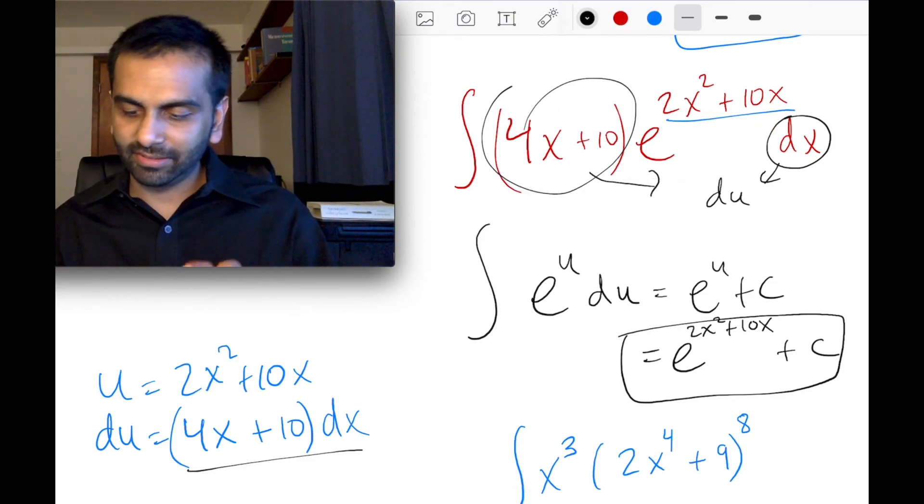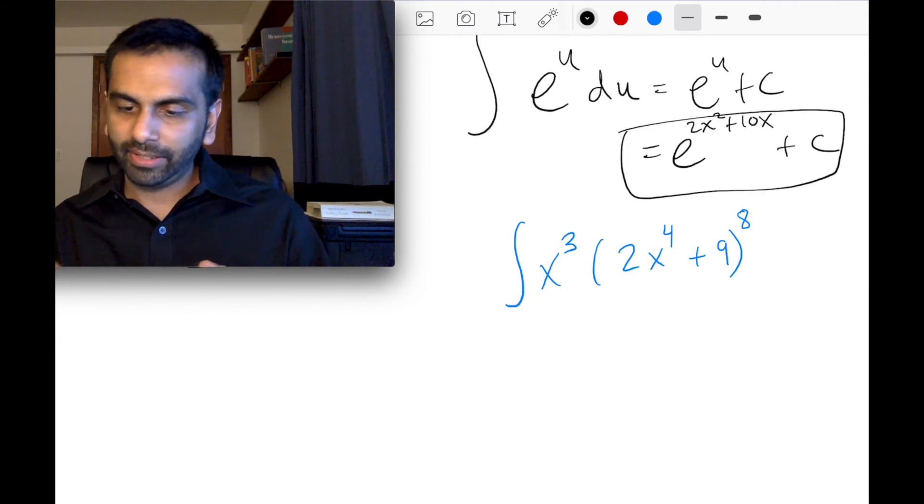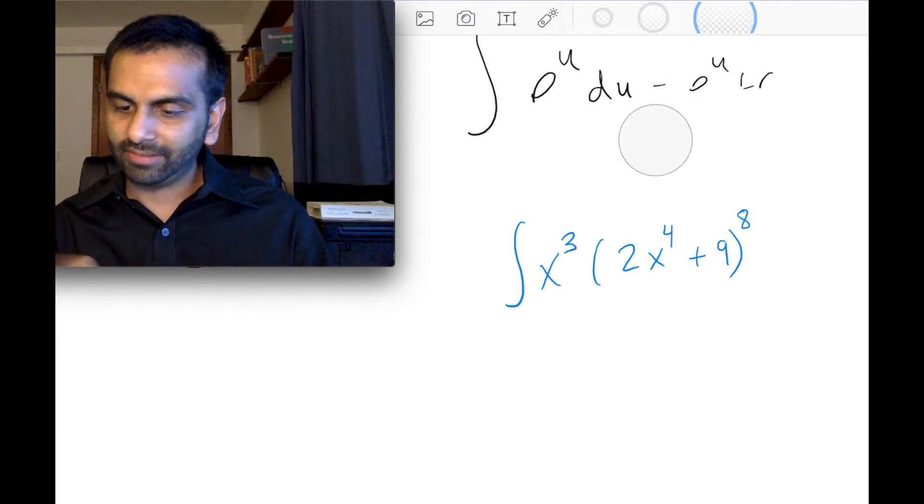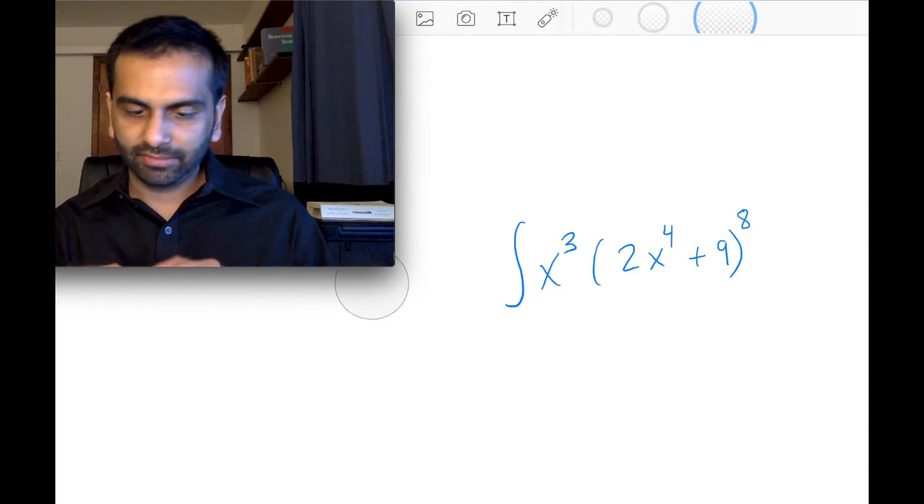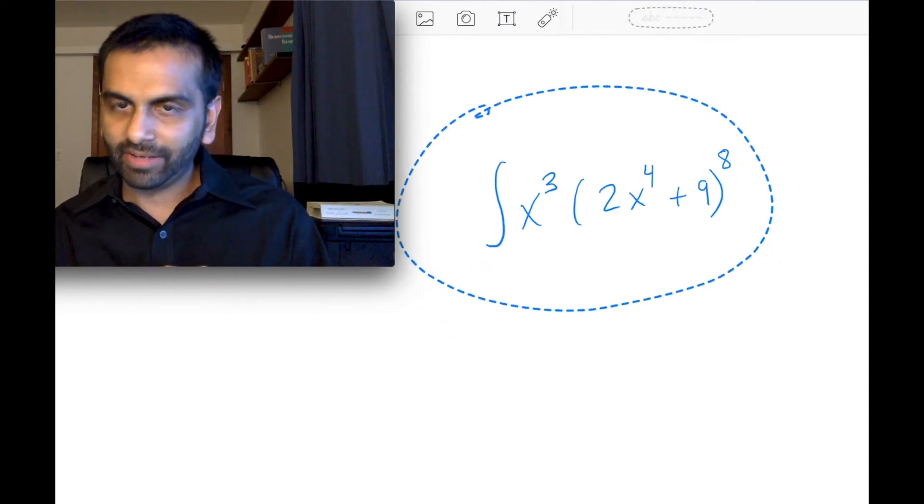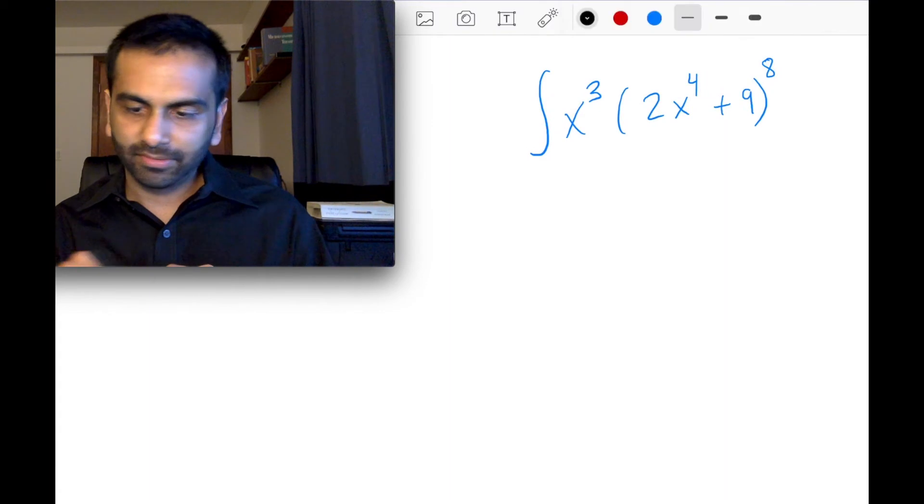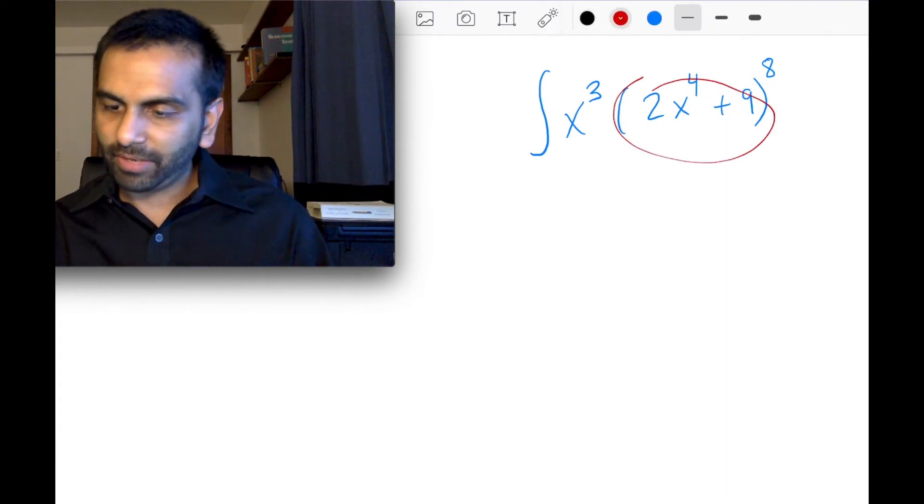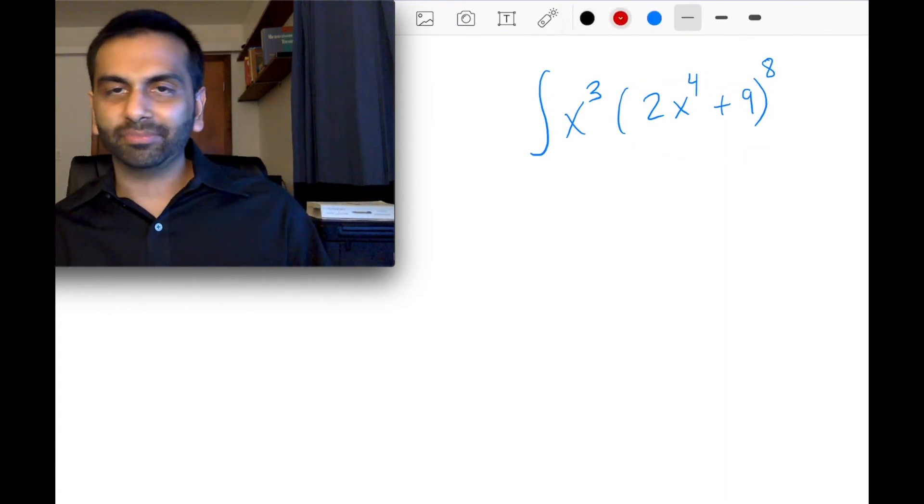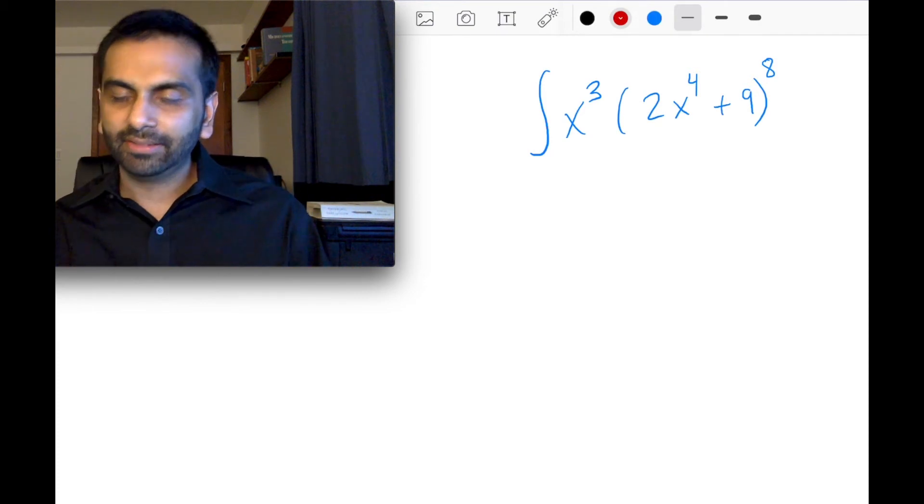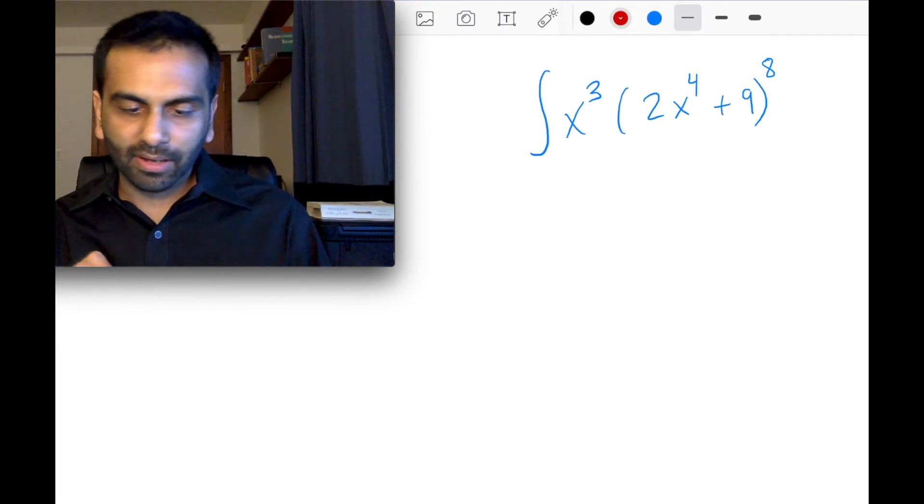Now let's just do one more example here. So let's say the example now is this, where we have the integral of x cubed times this expression, 2 times x to the 4th plus 9, all to the 8th power, and then a dx.